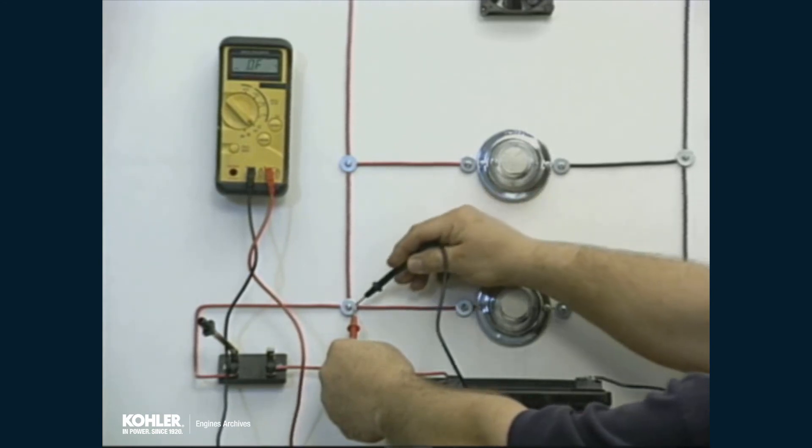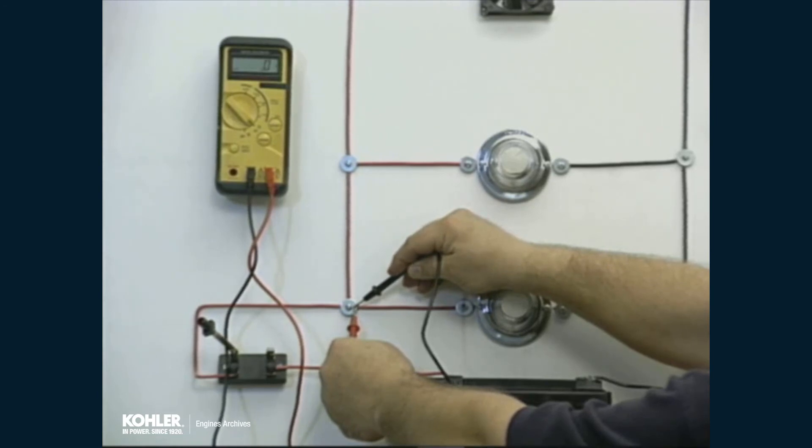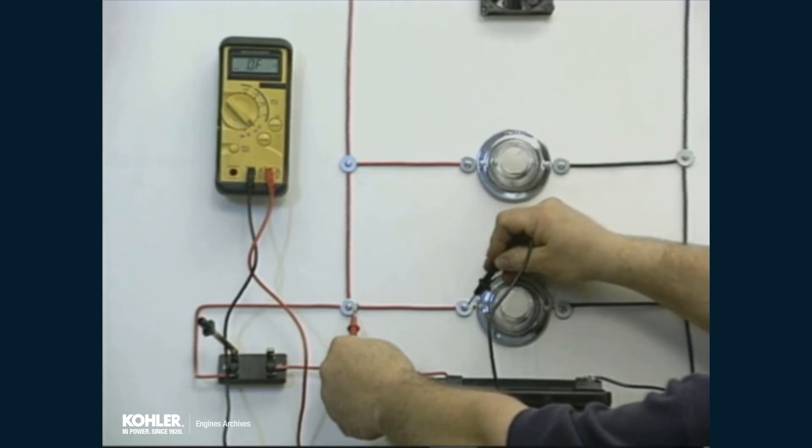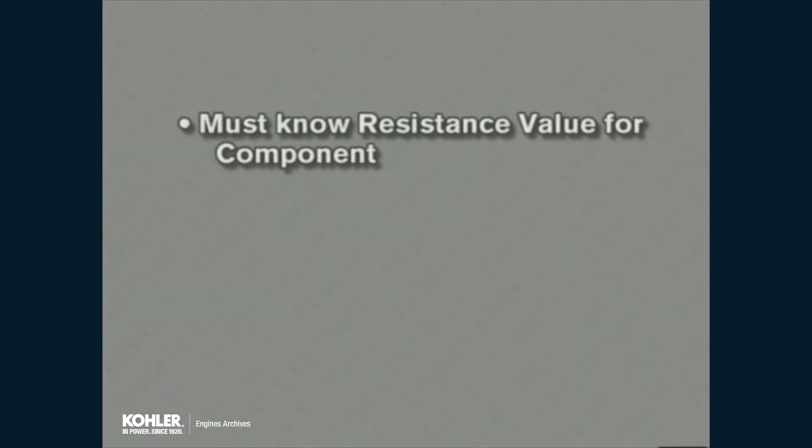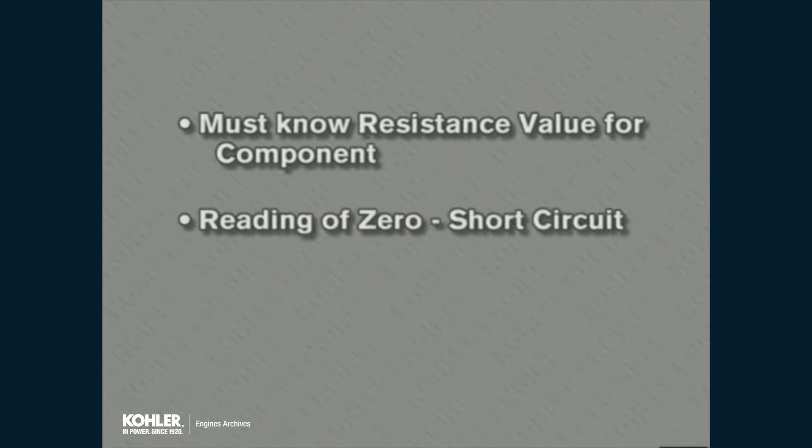If there are no working components or loads in the segment, resistance should be near zero. Higher resistance readings would indicate a continuity problem. If a component is being tested, you will need to know the resistance values for the component to make an accurate evaluation. Ohmmeter readings of zero ohms could indicate a short circuit, while very high readings could indicate an open circuit.